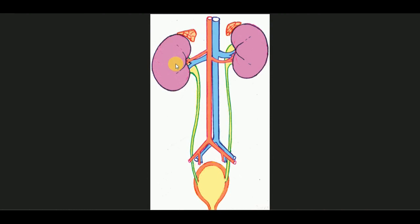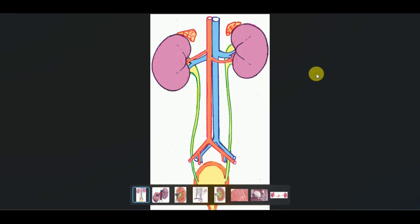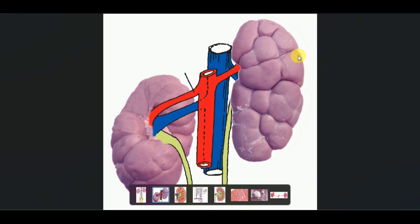They are smooth-surfaced in most of the mammals, but in some animals they are not smooth-surfaced and rather they are lobulated in appearance. This is due to the presence of grooves, and therefore we are getting a number of lobes. These are the kidneys of the cow. This is the left kidney and this is the right kidney. The right kidney is almost bean-shaped, while the left kidney is a little bit irregular in appearance.